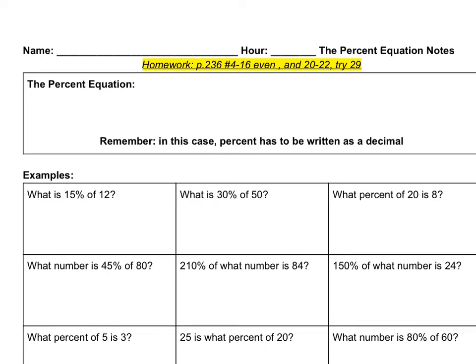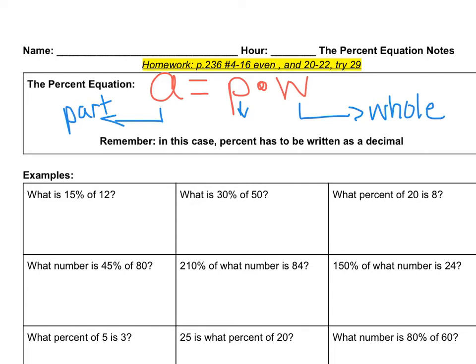So our equation looks like this: A equals P times W. In words, the A is the part, so that's like the piece of pizza or the number of pieces of pizza, and the W is the whole, so like how many pieces make a whole pizza, and then the P is the percent. But as you see here, and this is super important because if you don't do this right, then you will get every single one wrong. In this case, the percent has to be written as a decimal. So this is going to be a decimal when you put it into the equation.